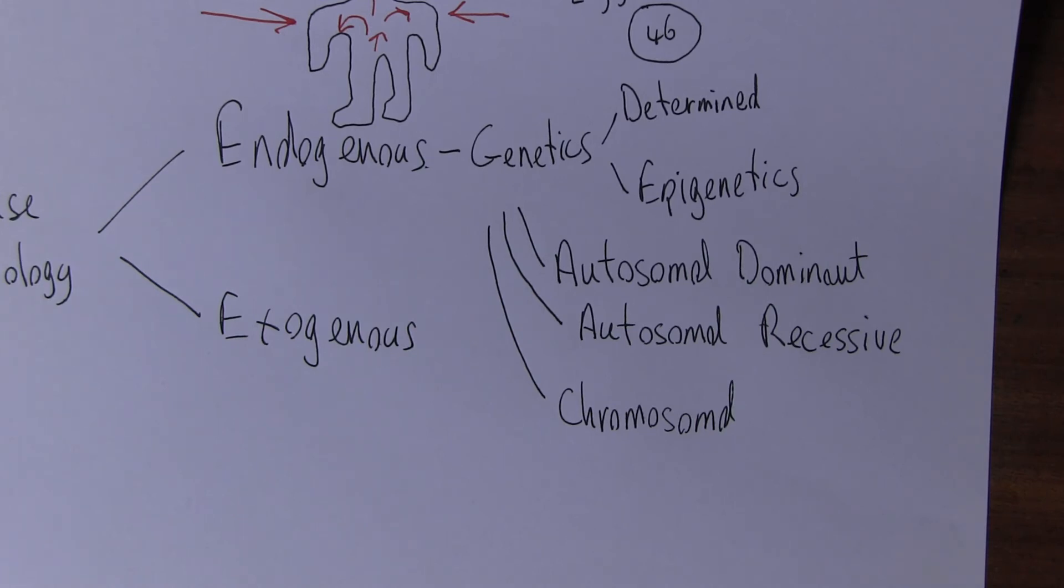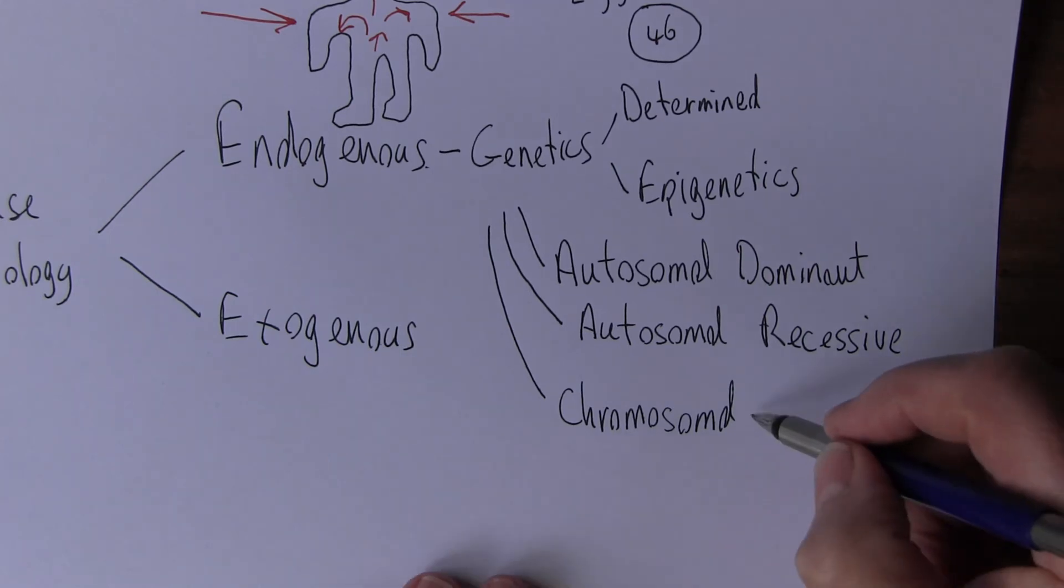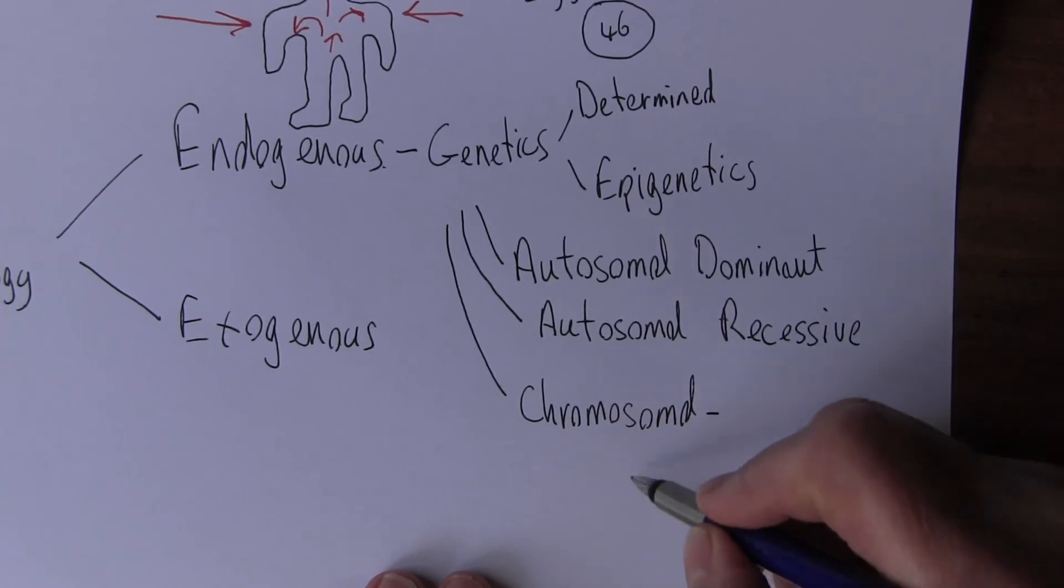These chromosomal disorders can be caused by environmental factors in parents such as being exposed to radiation, but normally there's an abnormal number of chromosomes or sometimes it's not just an abnormal number, there's what you call a translocation.